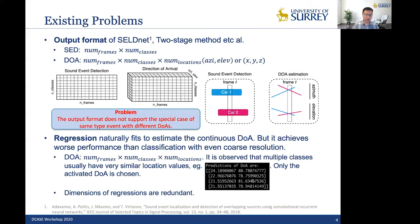And the second problem is for regression. Regression naturally fits to estimate the continuous DOA, but it achieves worse performance than classification with even coarse resolution. So for DOA output format, it is observed that multiple classes usually have very similar location values.